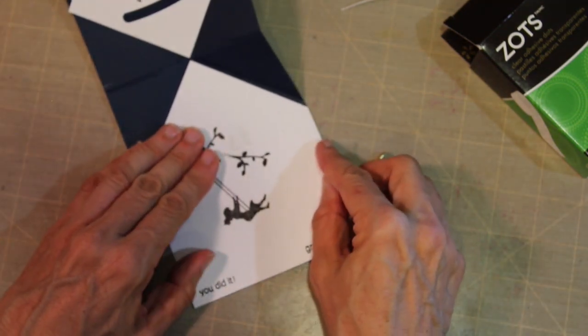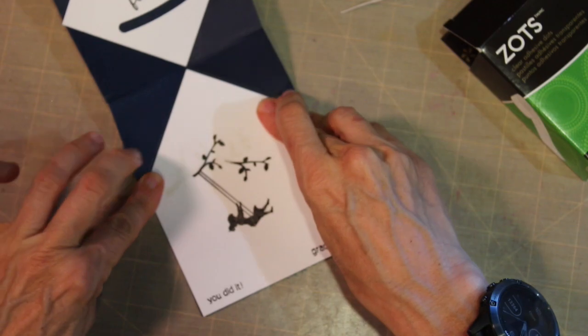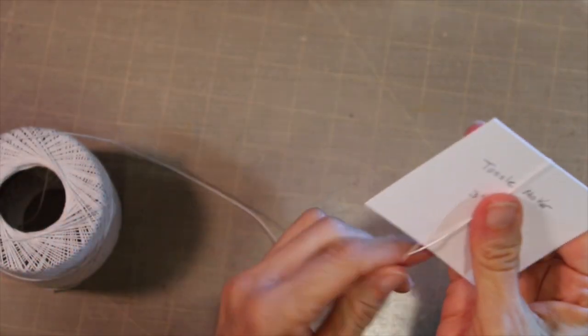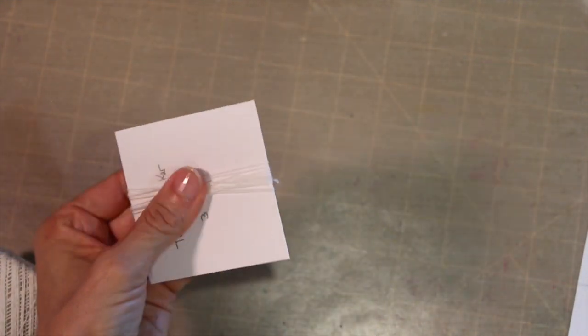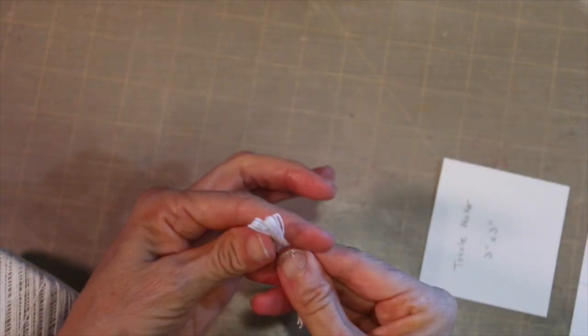Now the next thing we need to do is create the tassel. I'm just using some embroidery floss, and I've created myself a little template here. I'm going to wrap that floss around. I think I wrapped it around 12 times. Obviously you could wrap it more if you wanted it thicker or less if you wanted it thinner. Then I'm going to cut it off. I'm going to cut the bottoms and slide that off.